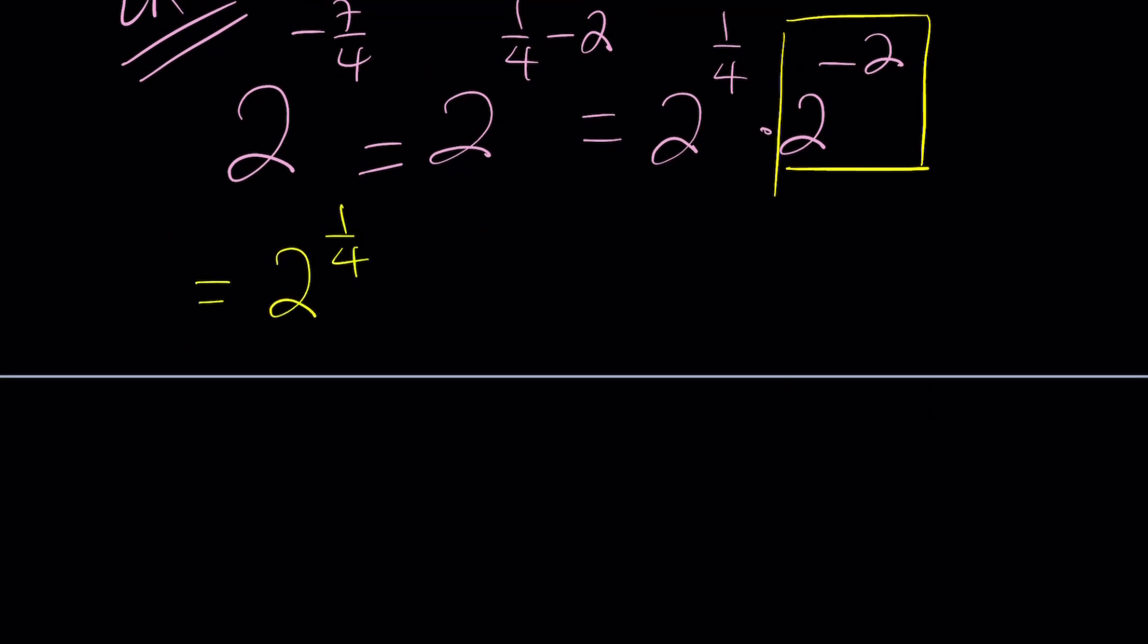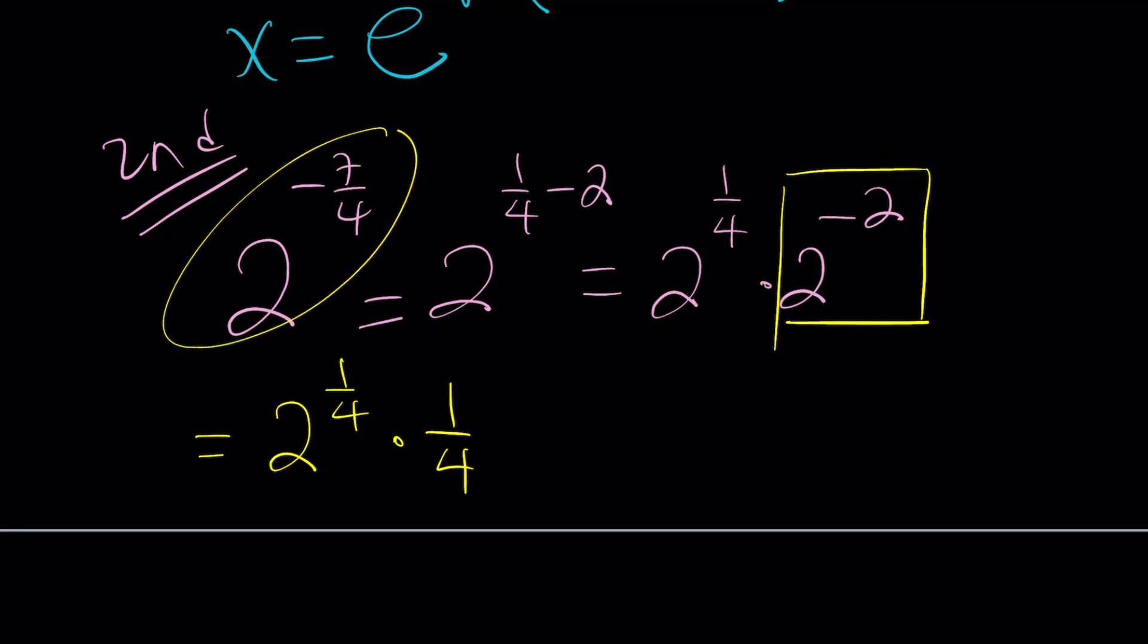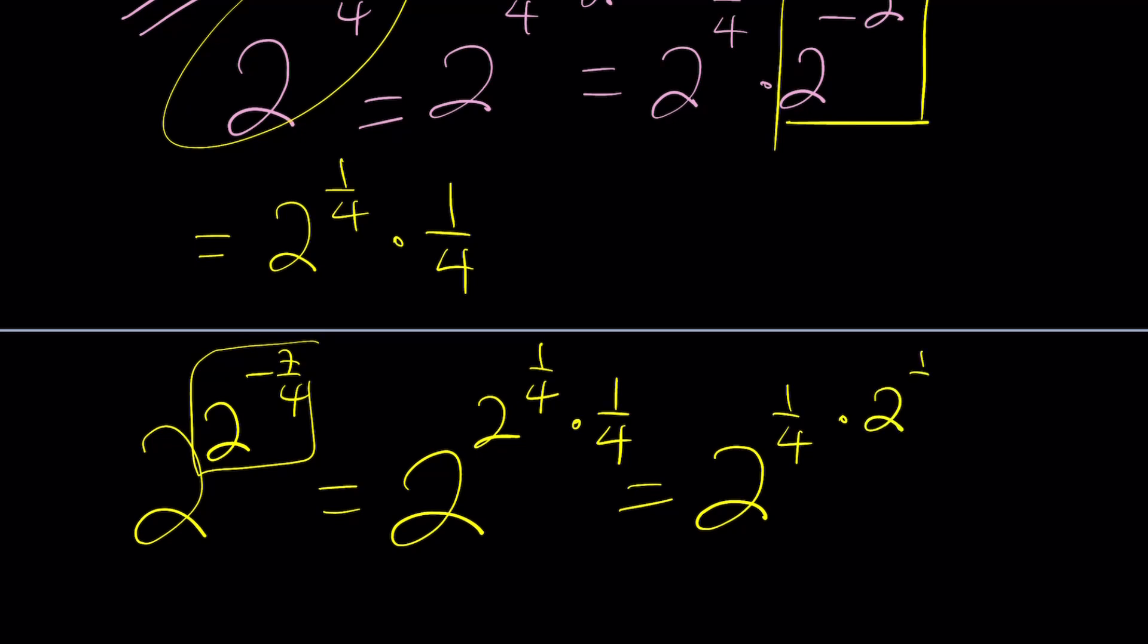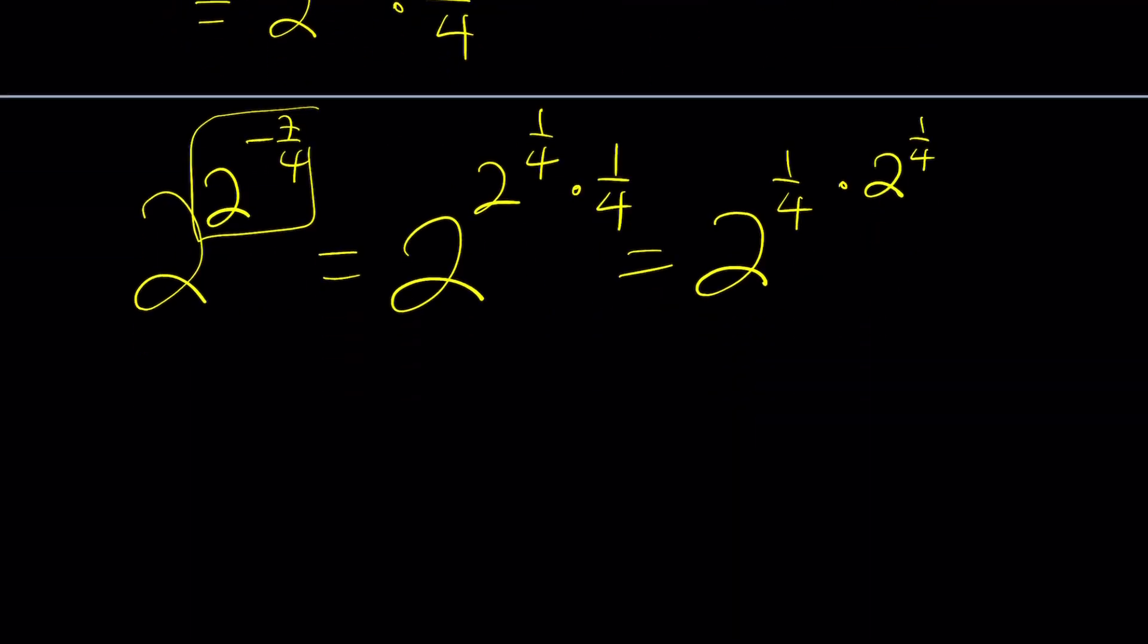Now 2 to the power 1 fourth times 2 to the power negative 2. I got 1 fourth because this is 1 fourth. So we can write this as 2 to the power 1 fourth times 1 fourth. Wait a minute, this was the exponent not the whole thing. Yes, because our number was 2 to the power 2 to the power negative 7 fourth.